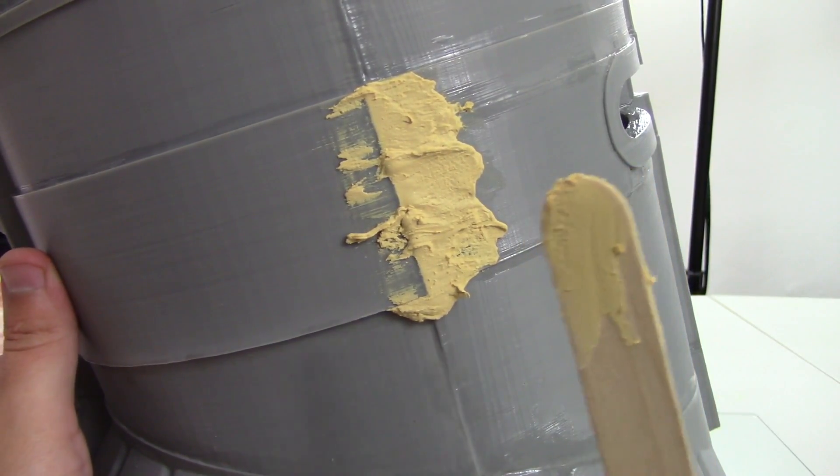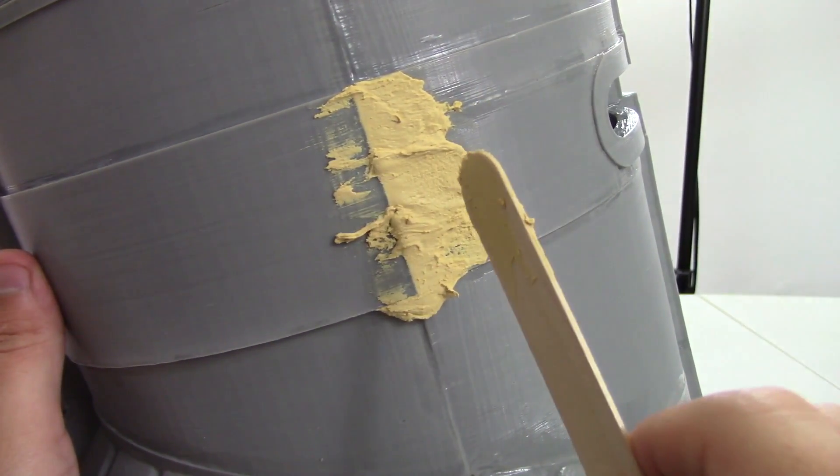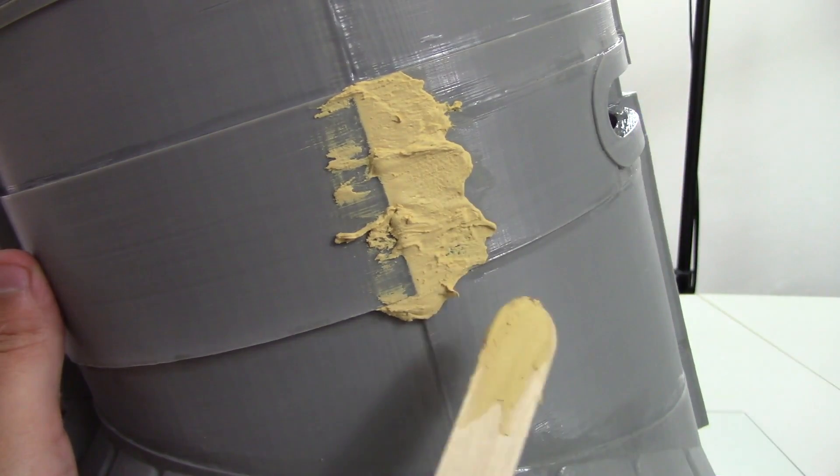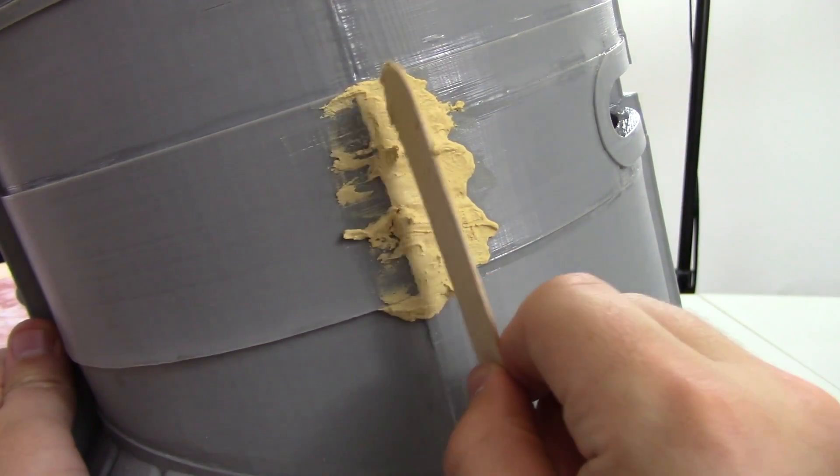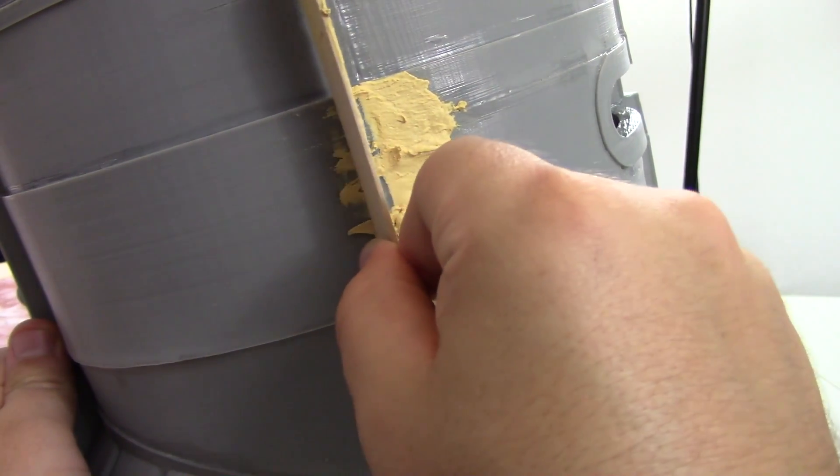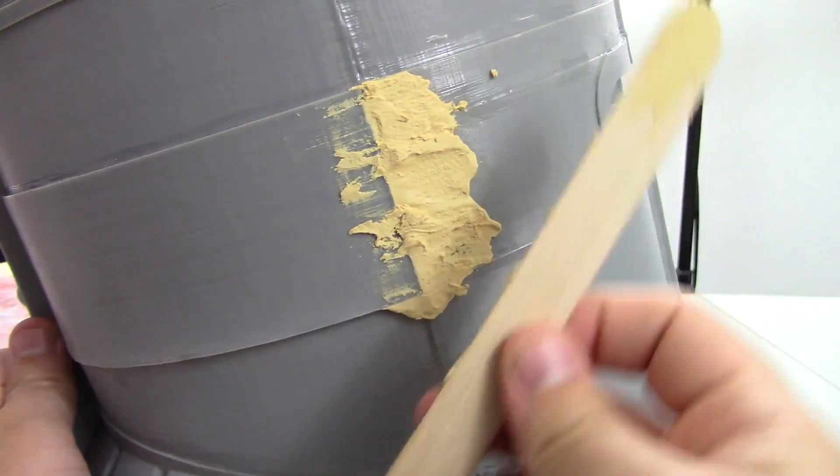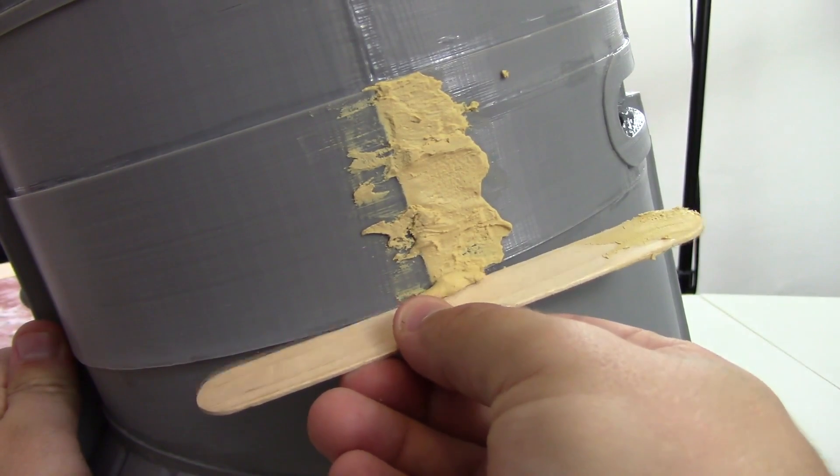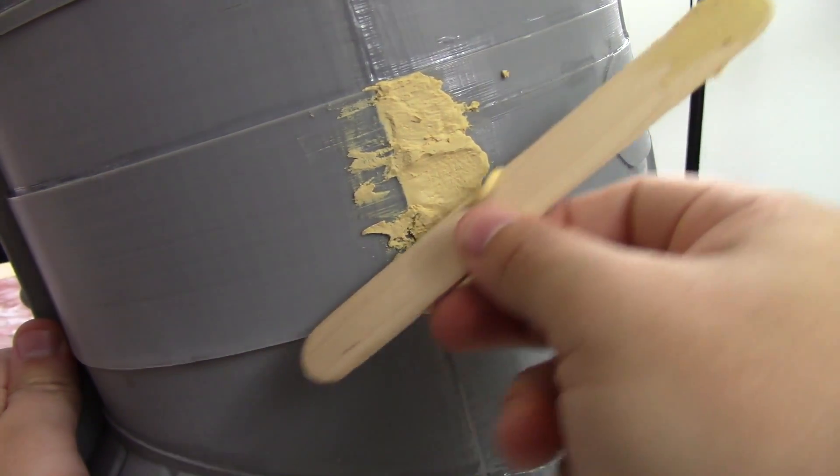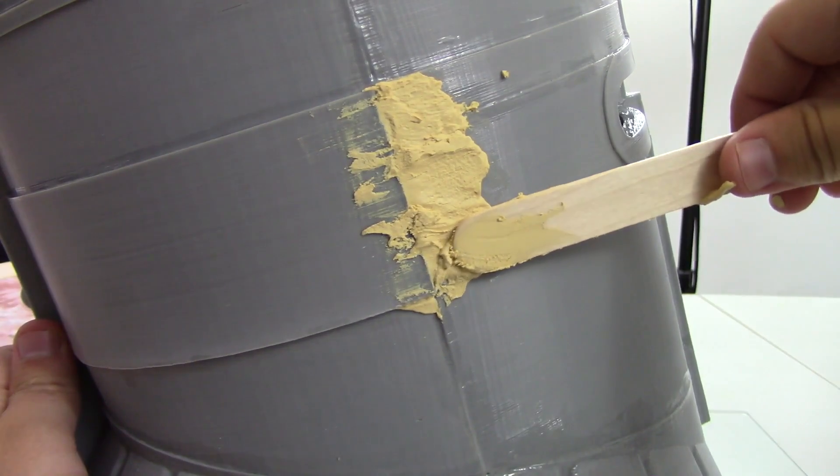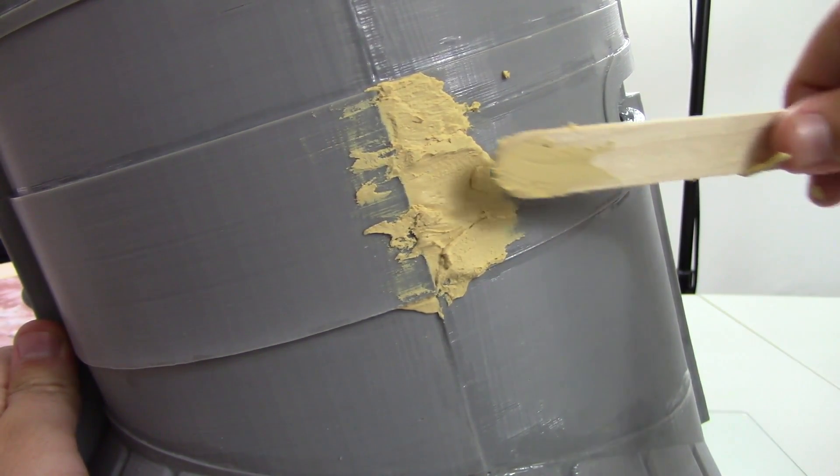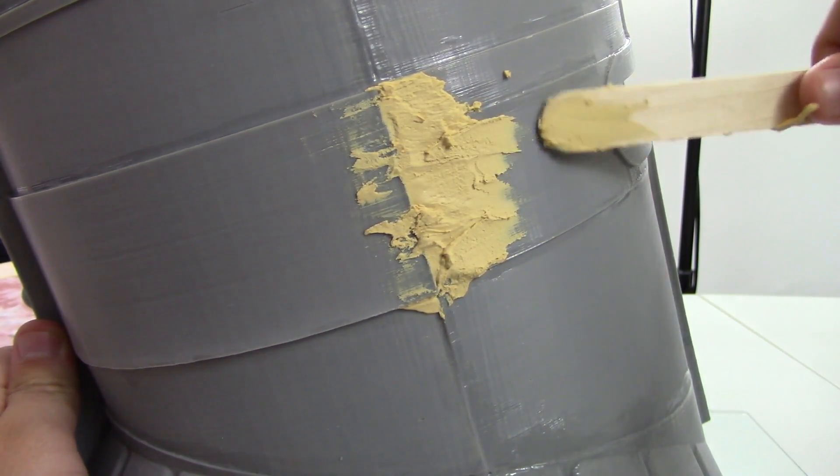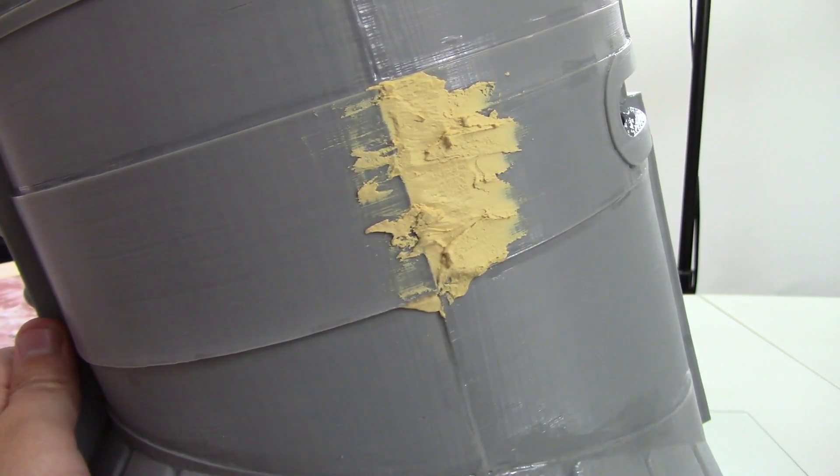Now the real question is how well will it adhere to the 3D prints and also how easy will it be to sand? I'm not too worried about the sanding part of this because it's wood filler, it's designed to do that. But the adhering to the 3D printed part could be an issue because obviously this is not wood. This is plastic.